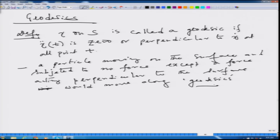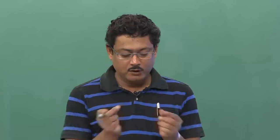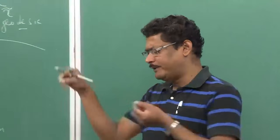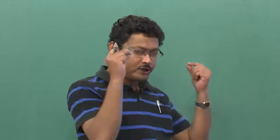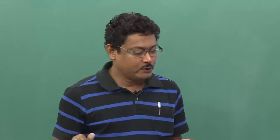Later on, perhaps in the next lecture, we will have another interpretation of geodesics which is a very interesting one. It says that if you have a regular smooth surface and you take two points, you can join these two points by various curves lying on the surface, and the shortest one will be the geodesic.